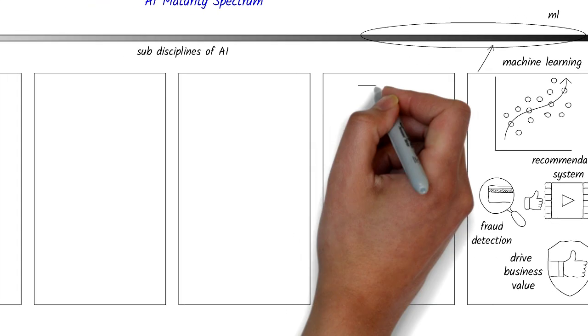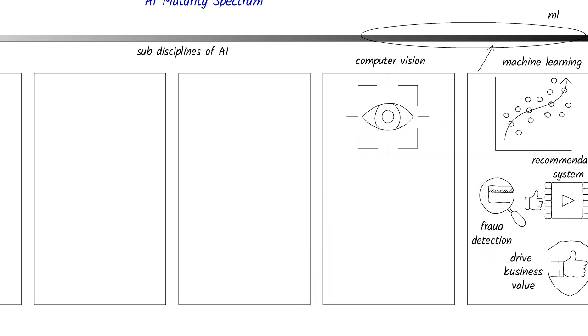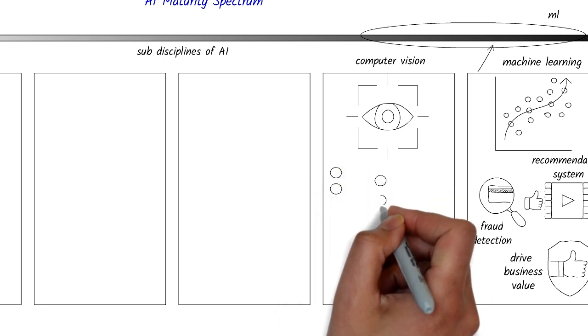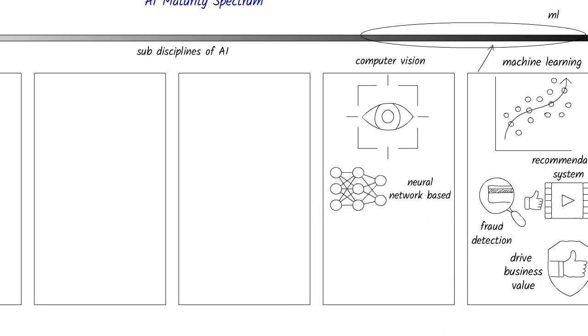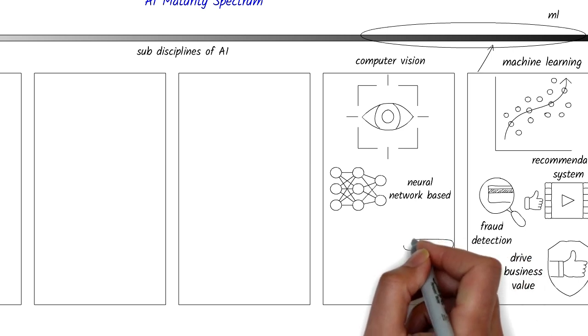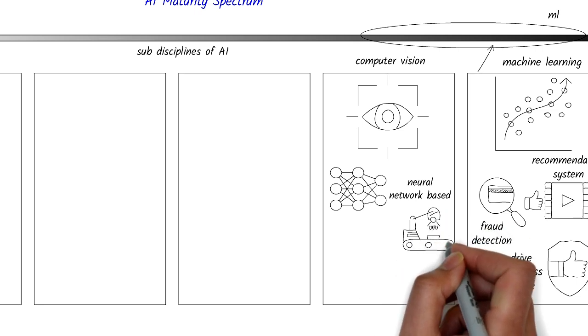Computer vision is another area where AI has made significant progress in the past few decades. Computer vision enables machines to interpret and understand visual data. It initially started out with some basic feature-based recognition, but has evolved into complex neural networks that are capable of highly accurate image analysis. This technology inspects products on assembly lines, monitors public spaces, and even recognizes faces.